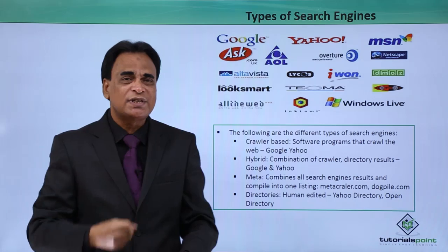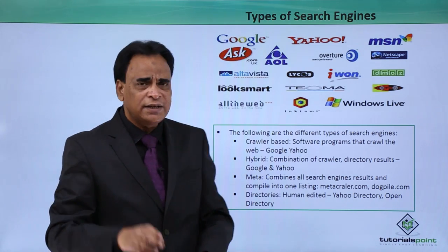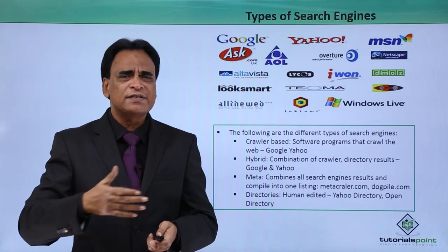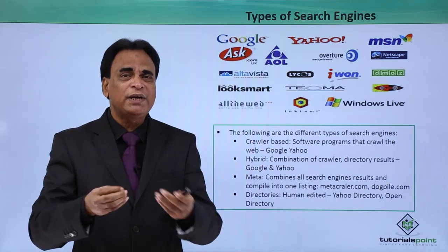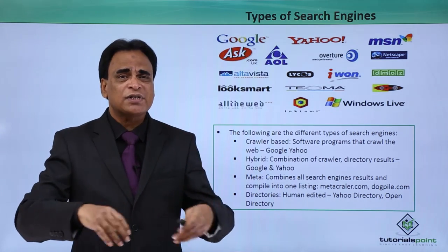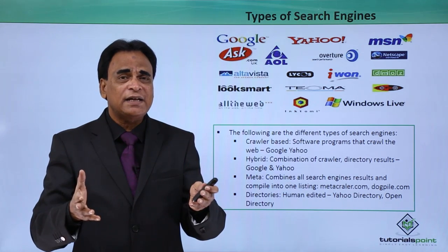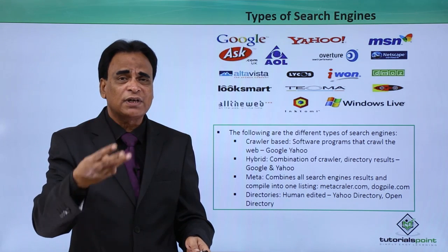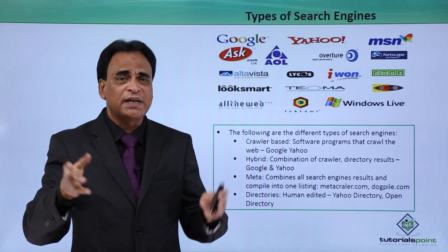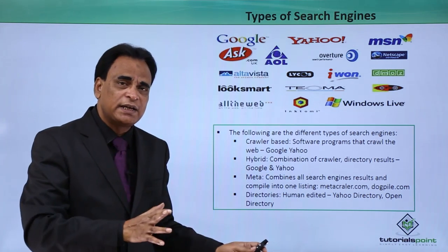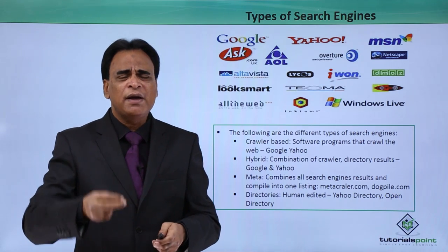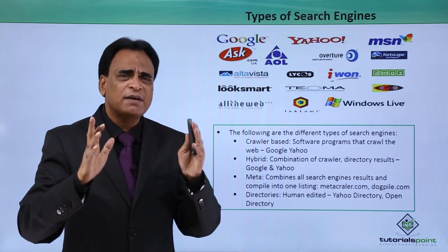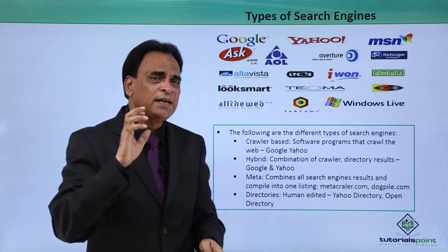The third type is directories, which are human-edited. There are many directories available for different industries, niches, and domains, and they are not automated. You submit your site to a directory, and that directory stores your website information — including the website name, meta tags, keywords, and description. That information is stored after human editing. These directories are also sometimes called search engines, though not in the true sense of the word. They store millions of websites and are human-edited directories.